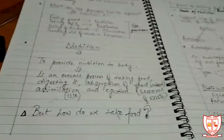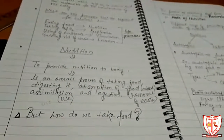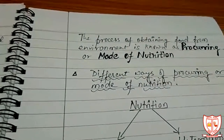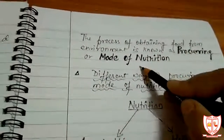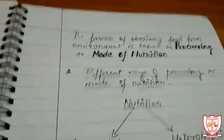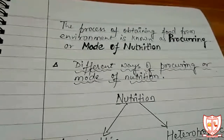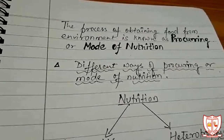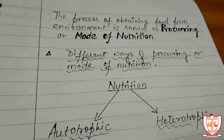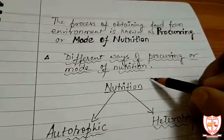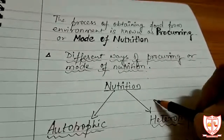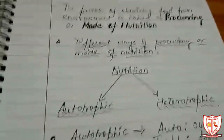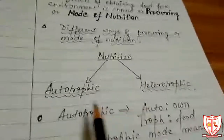Before knowing about the entire process of nutrition, we should know how the organism actually obtains food. We should also know what this process is called. The process of obtaining food from the environment is known as procuring or mode of nutrition — that is, how food is provided to the animal or plant body. The mode of nutrition is of two types: autotrophic and heterotrophic.